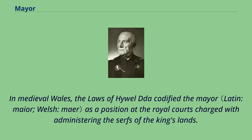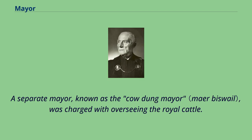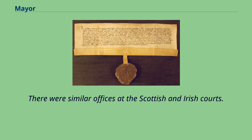In medieval Wales, the laws of Howell Dda codified the mayor as a position at the royal courts charged with administering the serfs of the king's lands. To maintain its dependence on and loyalty to the crown, the position was forbidden to the leaders of the clan groups. A separate mayor, known as the Cow Dung Mayor, was charged with overseeing the royal cattle. There were similar offices at the Scottish and Irish courts.